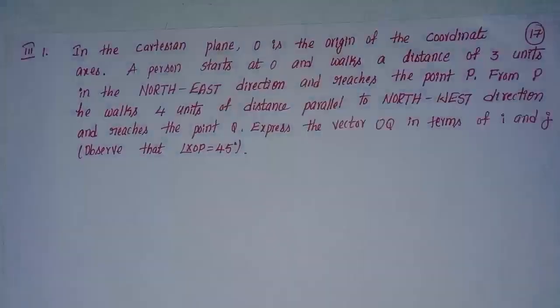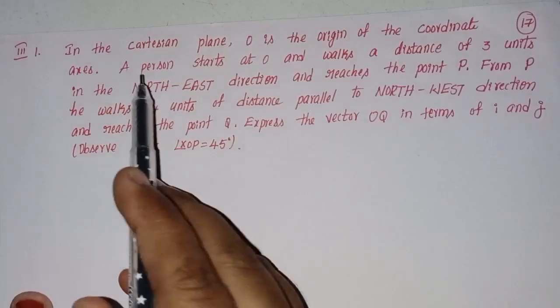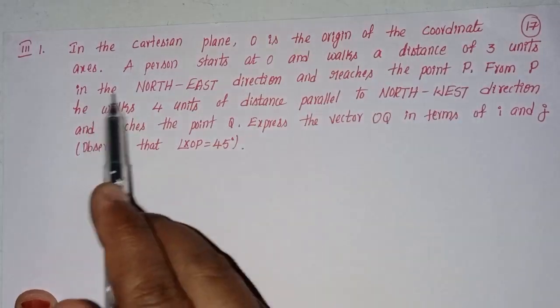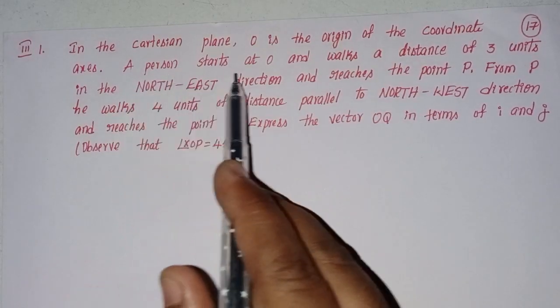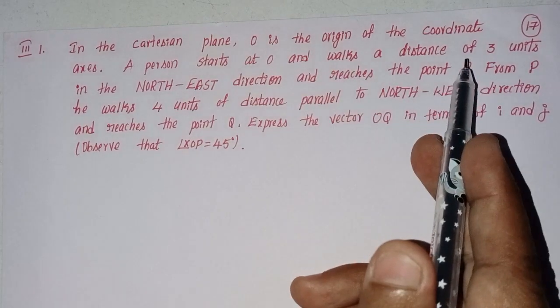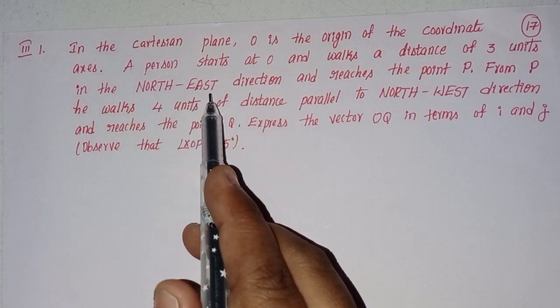This is Shahin, welcome back to our channel. Today we will discuss Intermediate First Year, Chapter 4, Addition of Vectors, Exercise 4A, Problem 1. In the Cartesian plane, O is the origin of the coordinate axis. A person starts at O and walks a distance of 3 units in the north-east direction and reaches the point P.